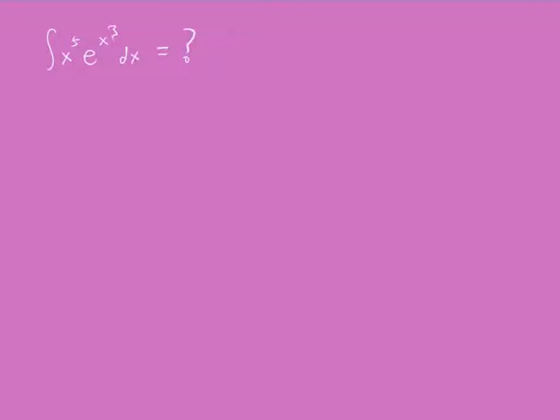Here's a problem, and I'll give you 5 seconds to understand it. The integral of x to the 5 times e to the x to the 3, dx. What's that equal to? Alright, 5, 4, 3, 2, 1.